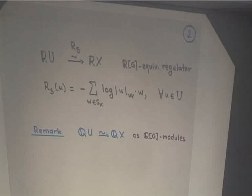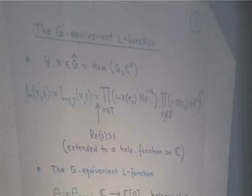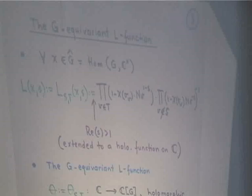Here is where the L-functions come into the game. I'm going to describe the analytic side of the story — the G-equivariant L-function associated to this picture. I take any complex-valued character χ of G (G is abelian, so characters are homomorphisms from G to C*) and associate to it an analytic object: the S,T L-function associated to χ. For the real part of the complex number s greater than 1, this is defined as an infinite product.